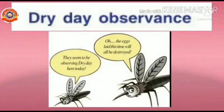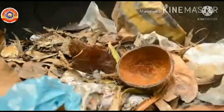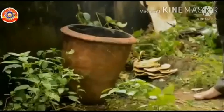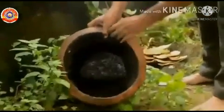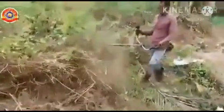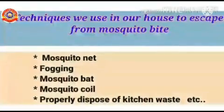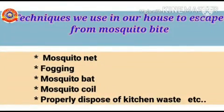Having a dry day once a week helps prevent the breeding of mosquitoes. This is done by draining away stagnant water from coconut shells, plastic tins, toys, pots, eggshells, and terraces. It will be more effective when this is done on the same day by all people residing in an area. Cleaning weeds and grass in house premises and cleaning drainage are other methods. Other techniques used to escape mosquito bites include mosquito nets, fogging, mosquito bats, mosquito coils, and proper disposal of kitchen waste.